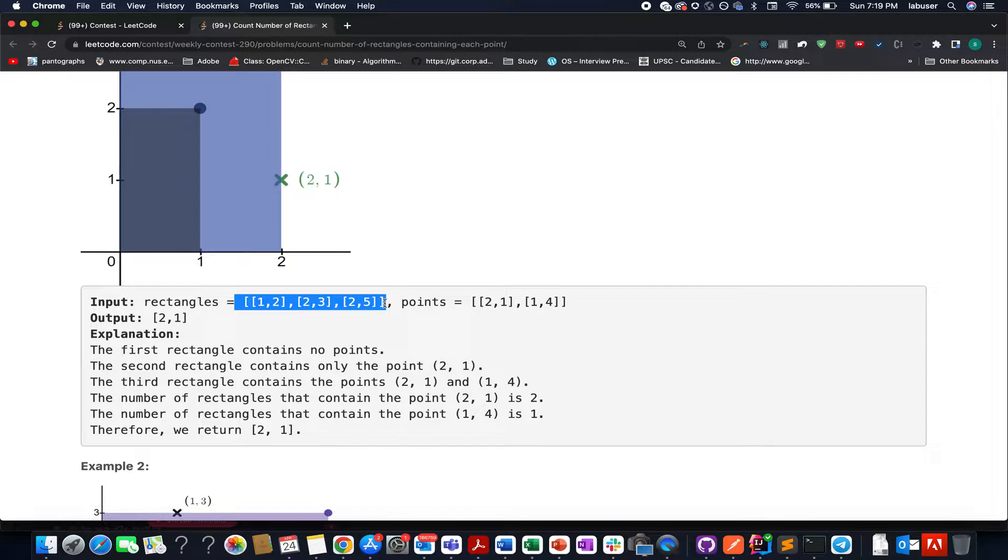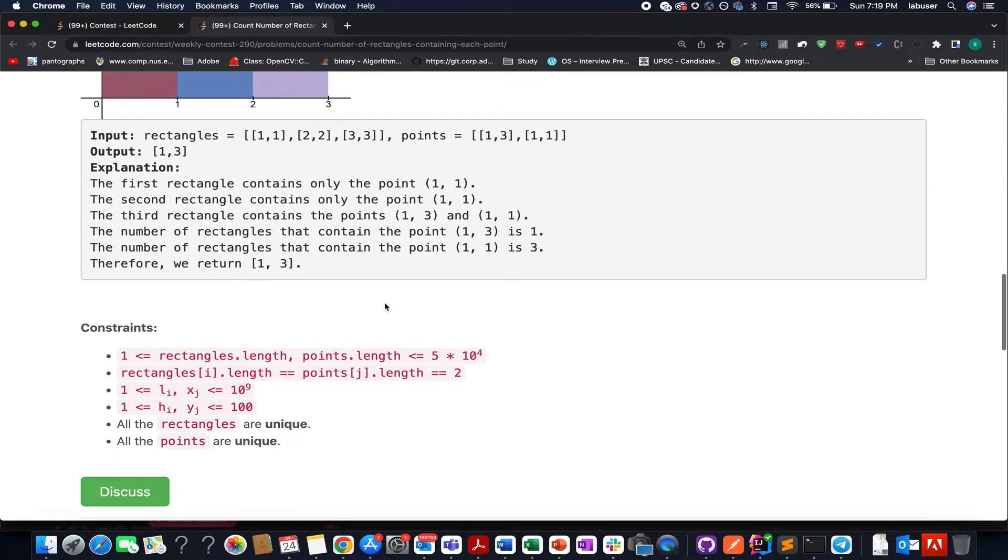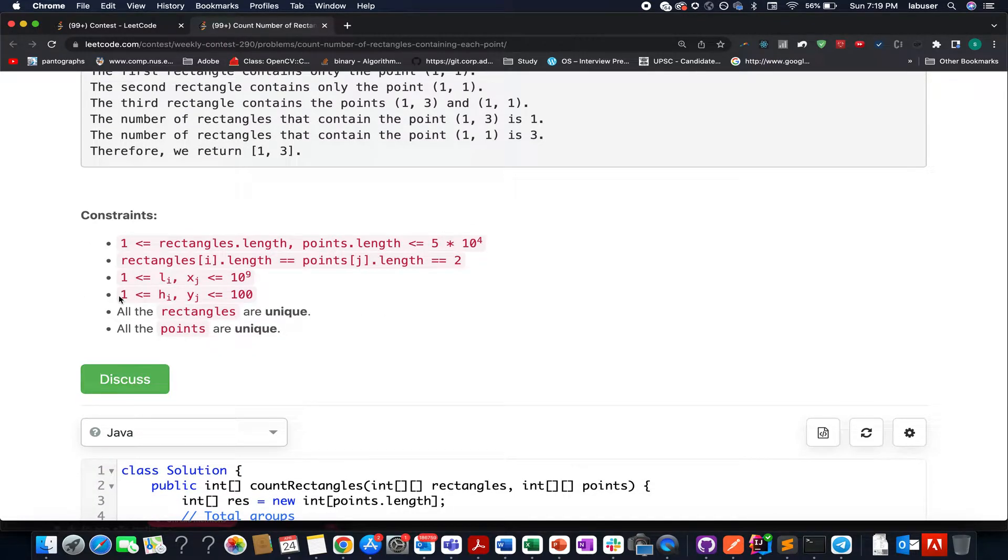What we can do is simply reduce this time complexity using the hint that is specified in the question which is that the height of the rectangles and the point coordinates y index lies in the range of 1 to 100. How? Let's walk through the presentation where I'll explain that.